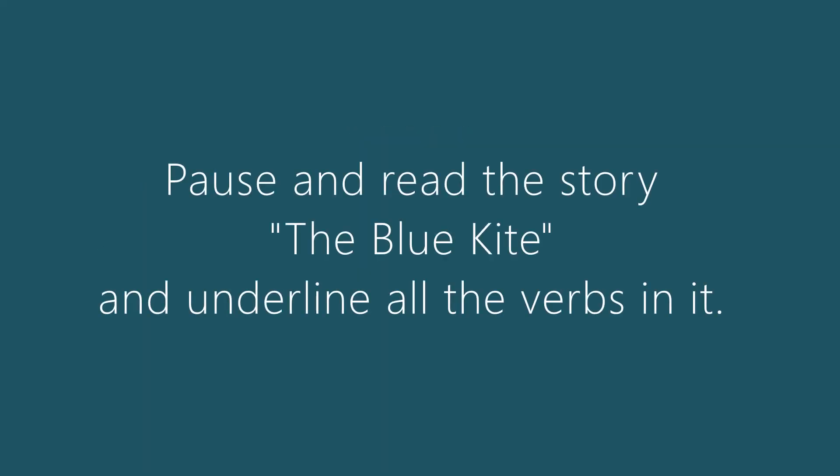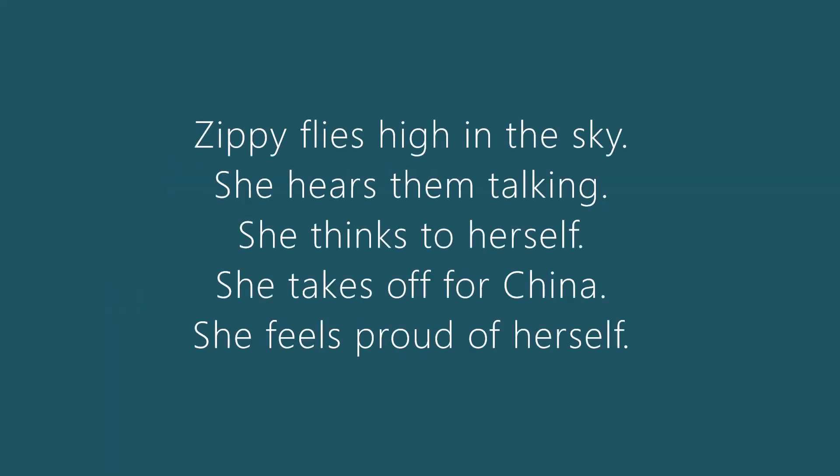Now, you may please read the story The Blue Kite and underline the verbs in it. Let's see few examples from the story The Blue Kite. Zippy flies high in the sky. She hears them talking. She thinks to herself. She takes off for China. She feels proud of herself.